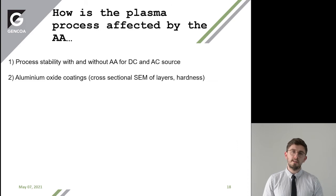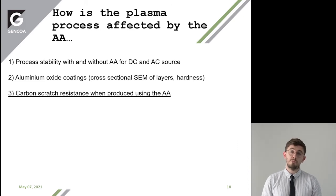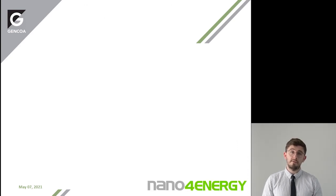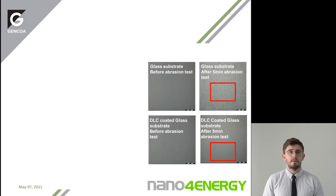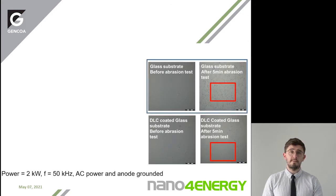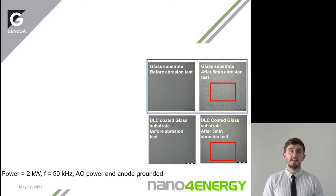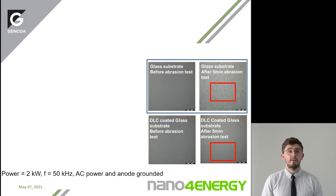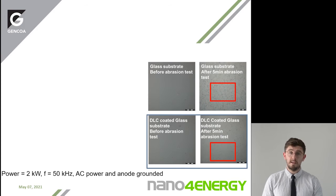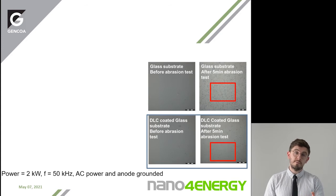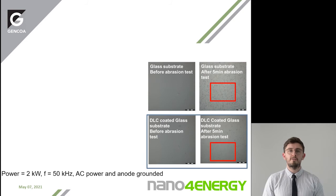Now we move on to carbon — diamond-like carbon deposited using the active anode. On our untreated glass substrate, before the abrasion test and after the abrasion test, you can see many scratches on the surface indicated by the red square. After treatment at two kilowatts of power and 50 kilohertz frequency of AC power, after being coated with diamond-like carbon, you can see the number of scratches are reduced.